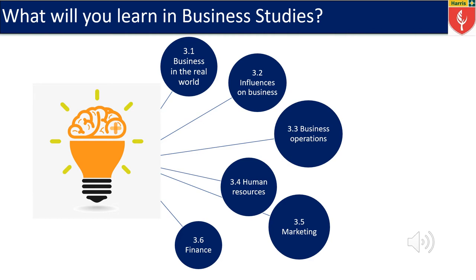3.2 is where we look at influences on business. Here we look at the acronym PESTLE, and we look at the political, economical, social, technological, legal, and environmental factors that might influence a business.